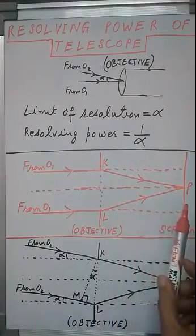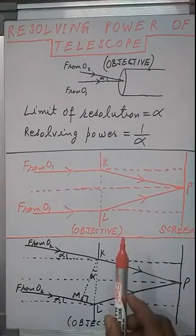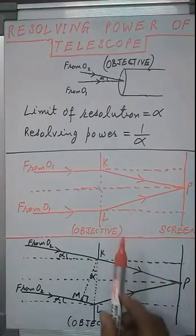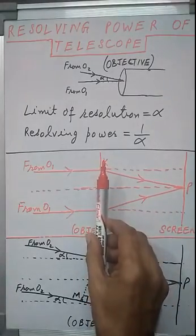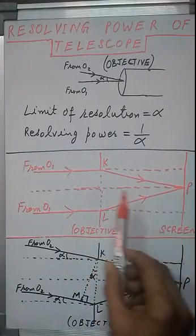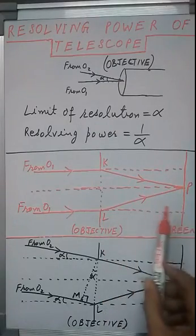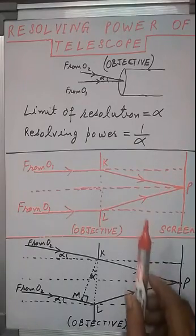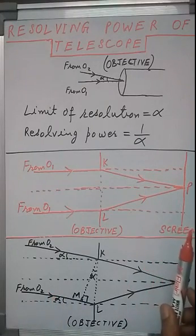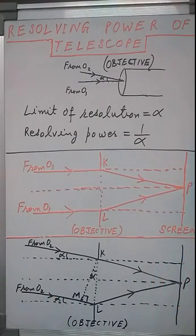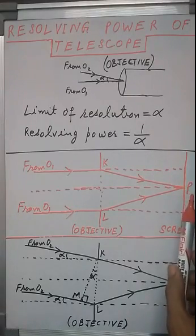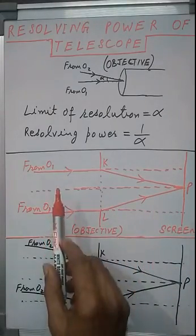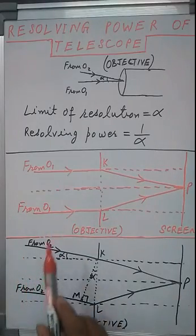Due to diffraction, a central maximum will be formed at point P, because the path difference between the two rays of light superimposing is zero — the path before KL is equal, and after the objective lens, KP is equal to LP. So path difference between two superimposing light waves is zero. That is the condition for central maximum of the diffraction pattern. So a central maximum will be formed at point P due to rays of light coming from object O1.